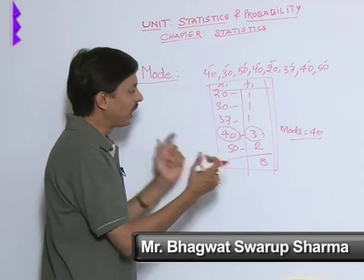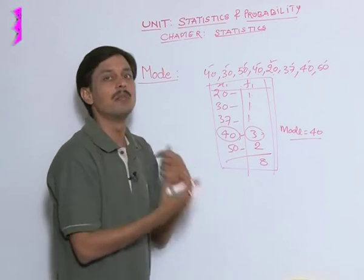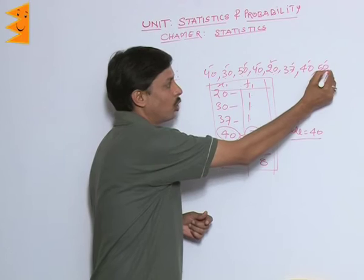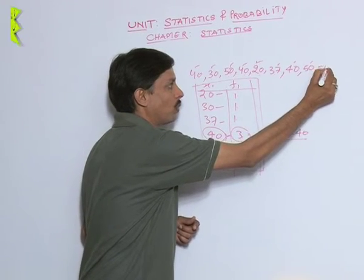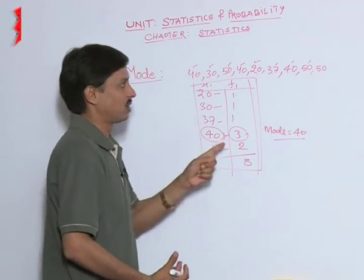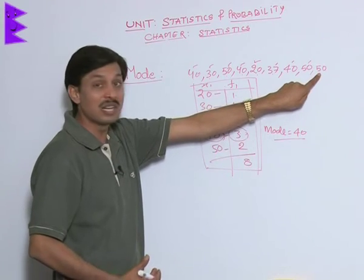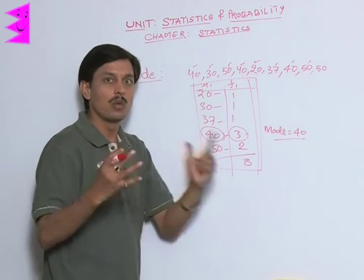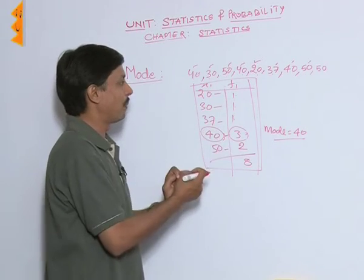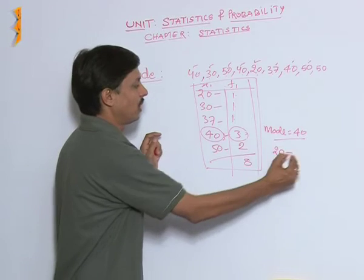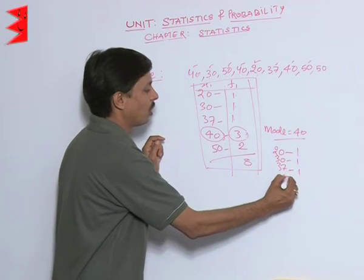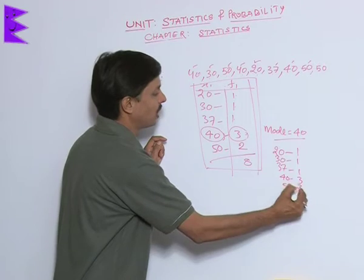Secondly, if I say that the child has appeared once more and scored in that test how many marks? Again, he has scored full out of full, that is if one more test in the school has been conducted and in that test he has scored how many marks? 50, full out of full. This was a question paper of 50 marks of mathematics. So to find the mode in this situation we will make another separate table: 20 observation frequency 1, 30 observation frequency 1, 37 observation frequency 1, 40 observation frequency 3, 50 observation frequency 3.